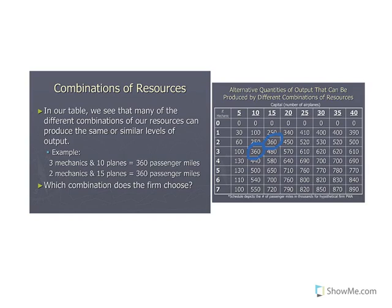The question facing the firm is: which combination do we choose? Do we hire three mechanics and acquire ten airplanes, or two mechanics and fifteen airplanes? Obviously the first consideration is which one has the lowest cost. However, before reaching that decision, we have to know whether we are making a short run versus long run decision.